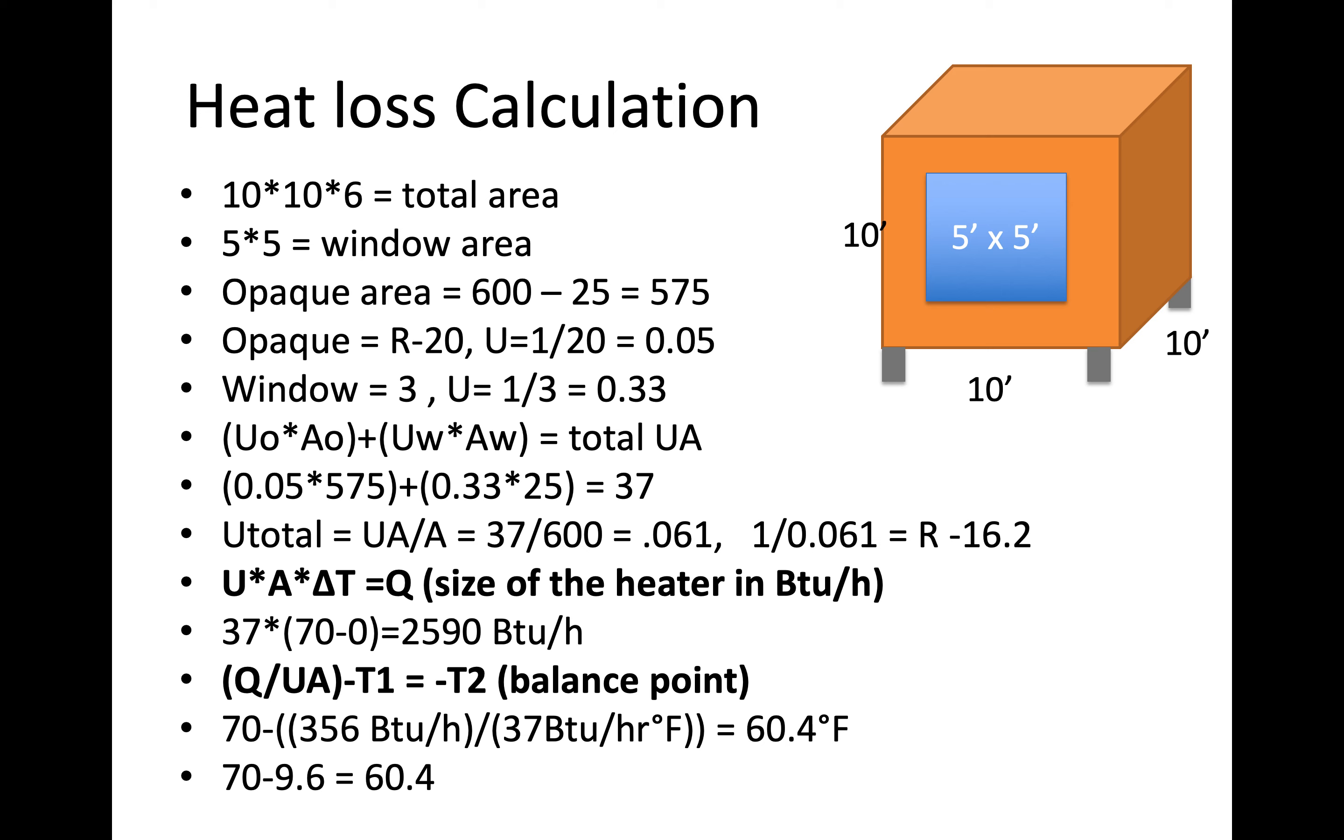So we can calculate the balance point. So that's the temperature outside that would require this person who's giving off 356 BTUs per hour, the temperature outside that would require him to turn on the heater. So we can just rearrange that equation to solve for temperature 2. So we've got q, which we already calculated, divided by the UA. So q is the energy that's available to us from his body. That's the 356 BTUs per hour. And the UA we've calculated earlier, that's 37. And so we can set it up q divided by UA minus temperature 1, which we also know because we know that he's really strict about this 70 degree temperature he requires. So we set that equation up, we're solving for temperature 2, and we get 60.4 degrees Fahrenheit.